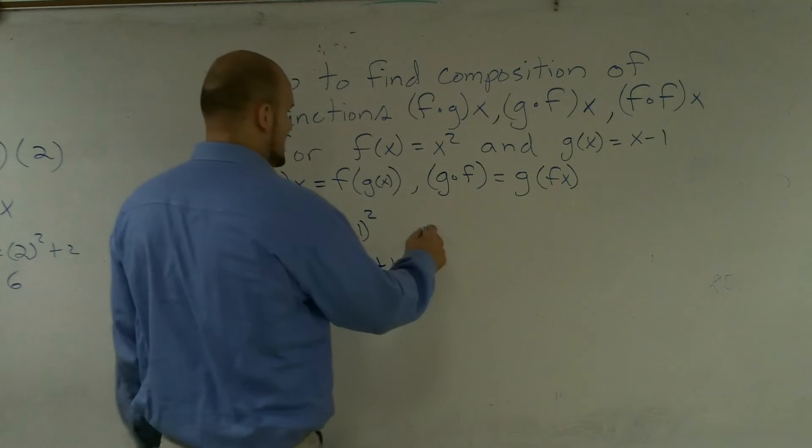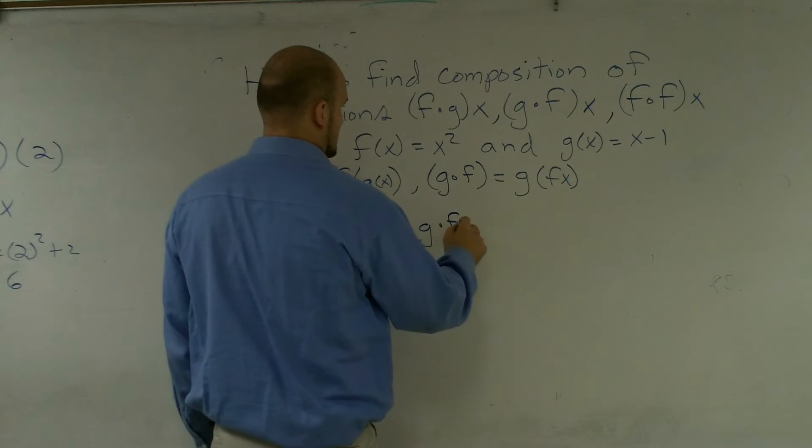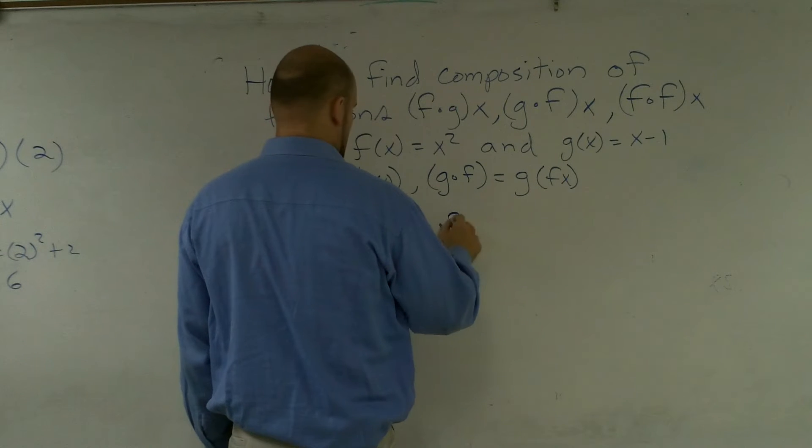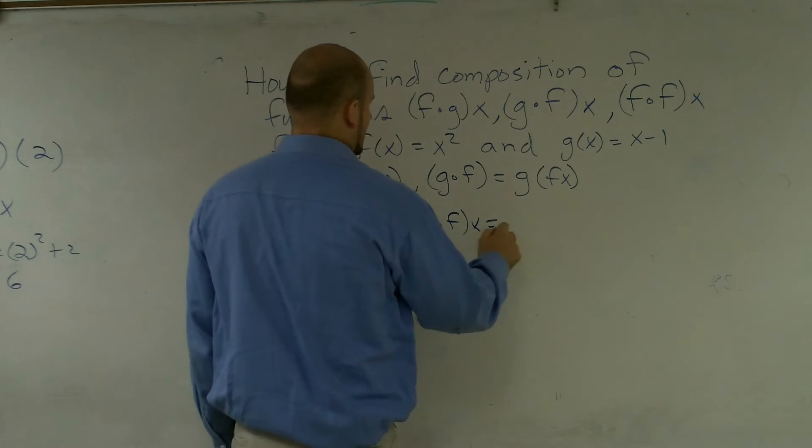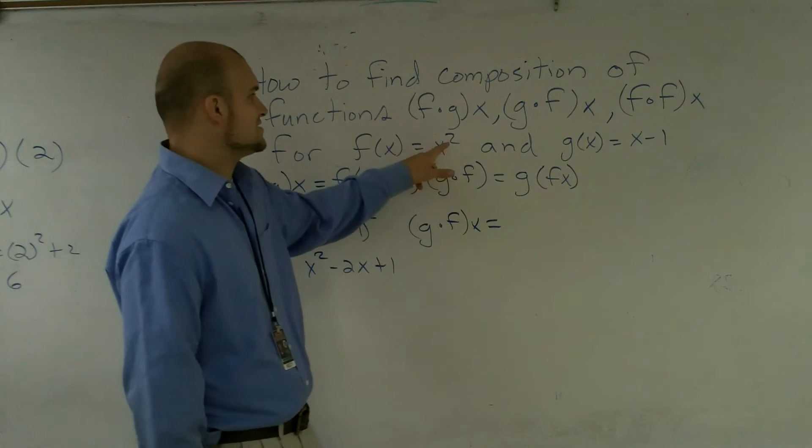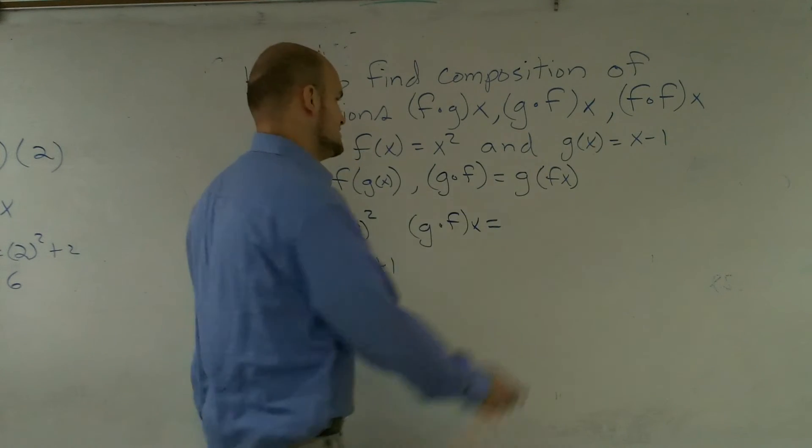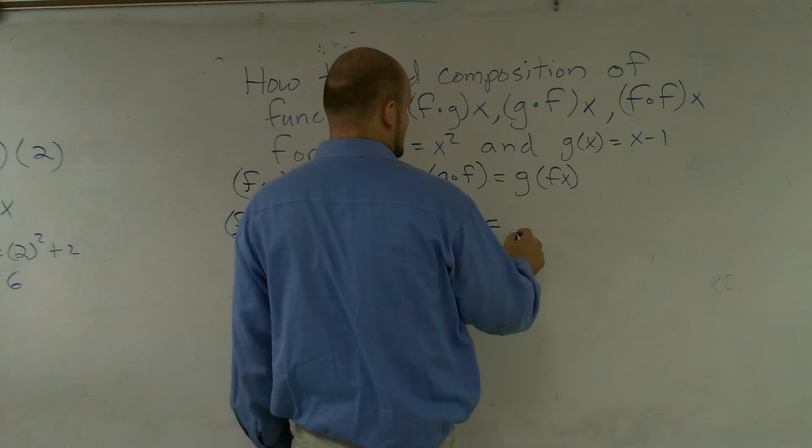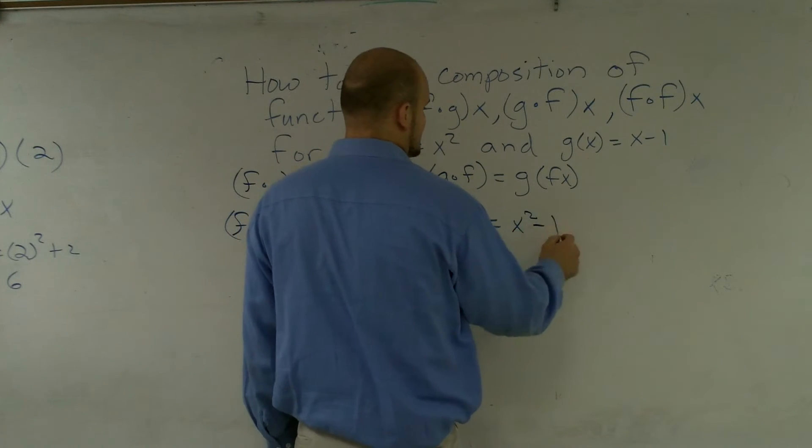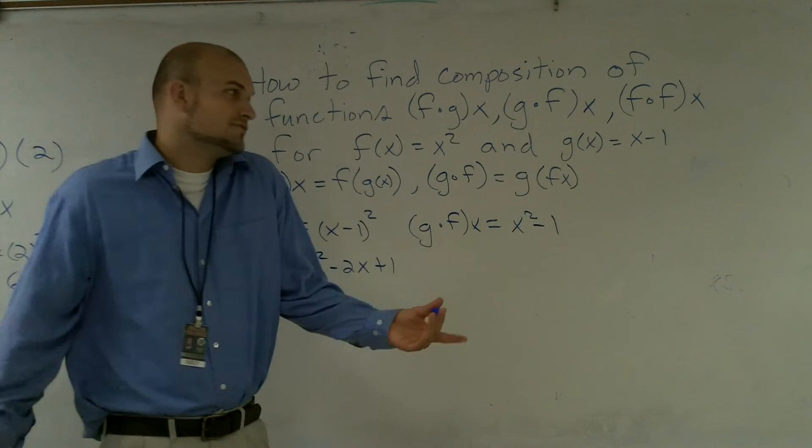Then to do the next one, if I was going to do g of f of x, now what I'm going to do is I'm going to plug in this x squared into that other equation, into my g of x equation. So it's just going to simply be x squared minus 1. I can't simplify that any further.